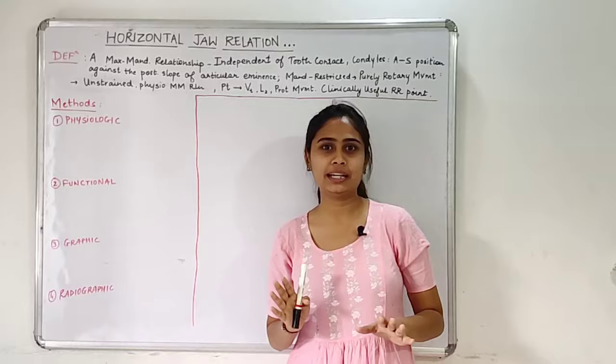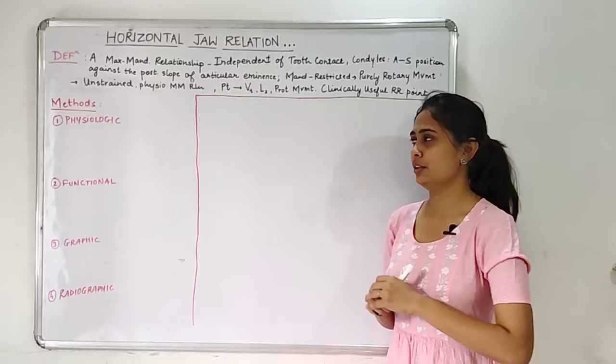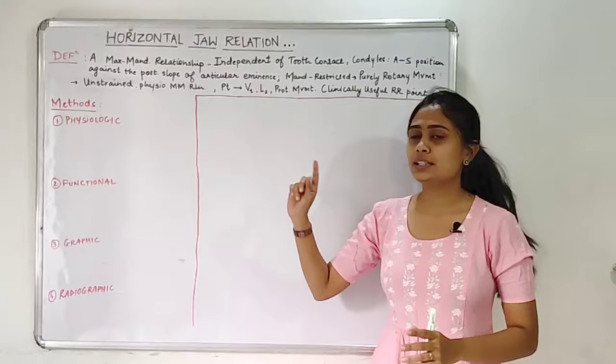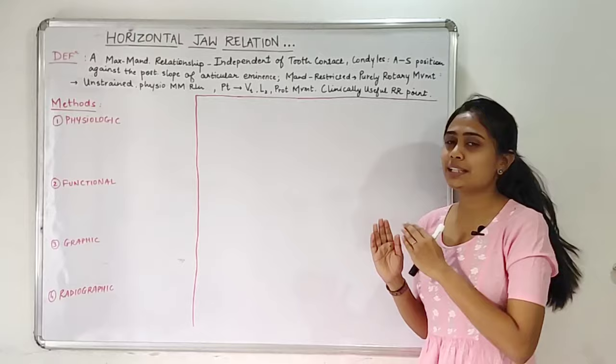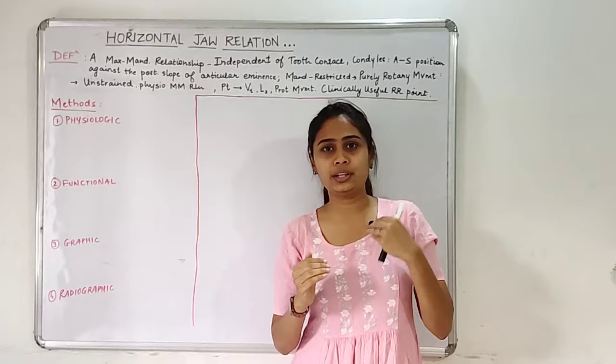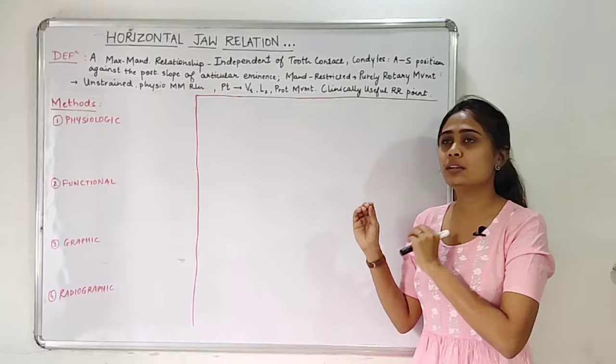I know it is a very big and difficult definition to memorize, but here we will simplify it and learn it together. The definition of horizontal jaw relation or centric relation is: it is a maxillomandibular relationship which is independent of tooth contact, in which the condyles articulate in the anterior superior position against the posterior slope of the articular eminence. We will learn this first half, then go about with the second half.